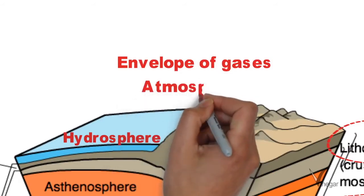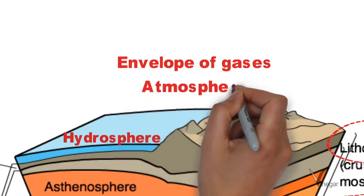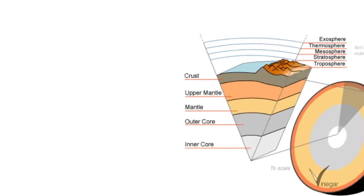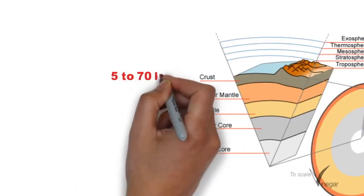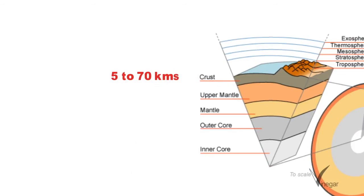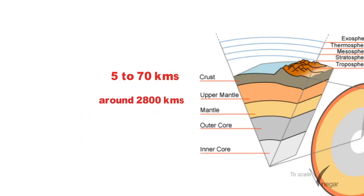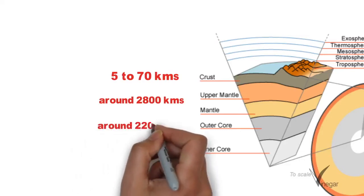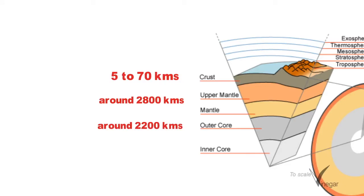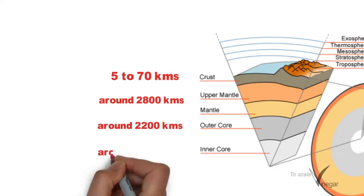Above the crust, up to a height of around 15 miles, there is an envelope of gases known as the atmosphere. Let's look at this structure once again. The crust is 5 to 70 kilometers thick. After that we have the mantle, which consists of two parts — upper mantle and lower mantle — together around 2,800 kilometers in thickness. The core also has two parts: the outer core, around 2,200 kilometers, and the inner core, around 1,200 kilometers.